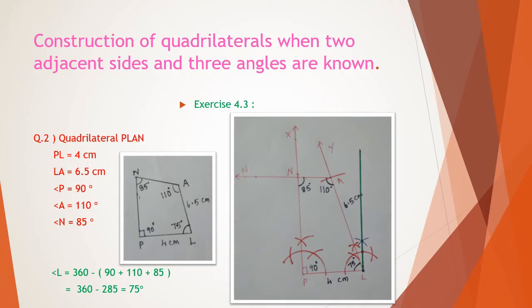As per the heading, we have got two adjacent sides and three angles. We have to start the construction with one side — PL or LA you can take. Then we try to construct two angles on the side which we draw first. In this case we have to find out the fourth angle, otherwise we cannot do the construction.